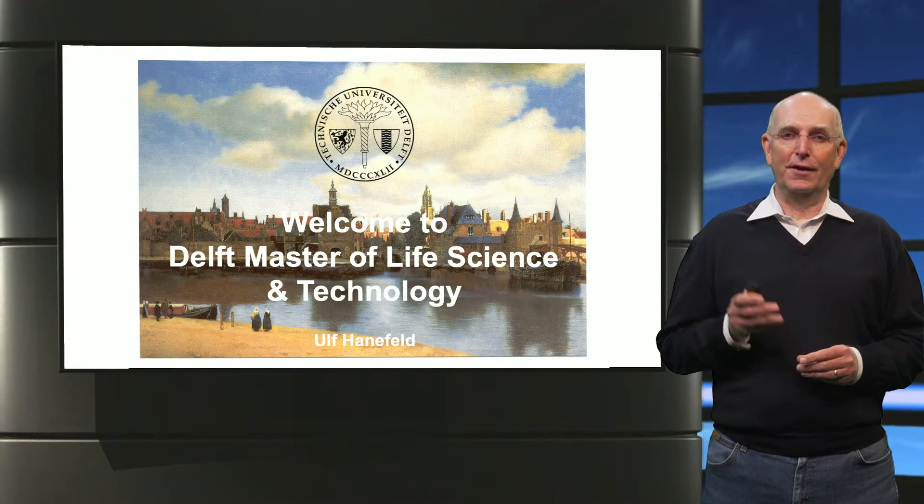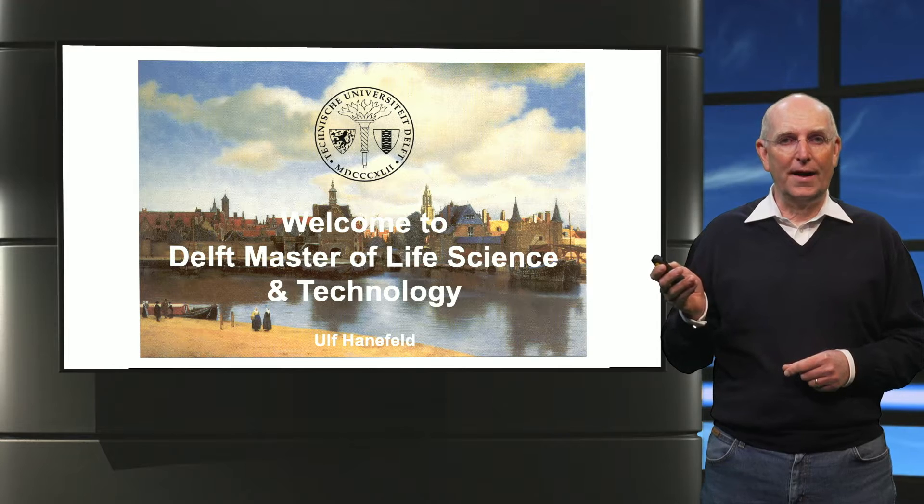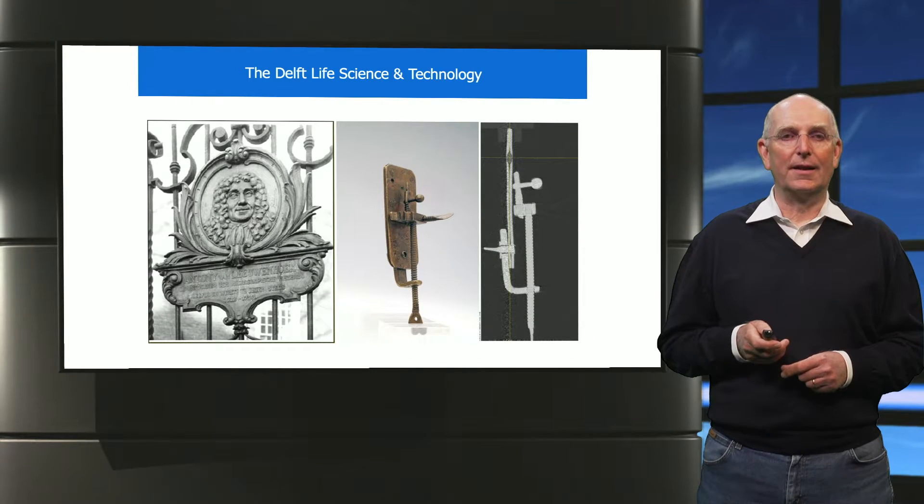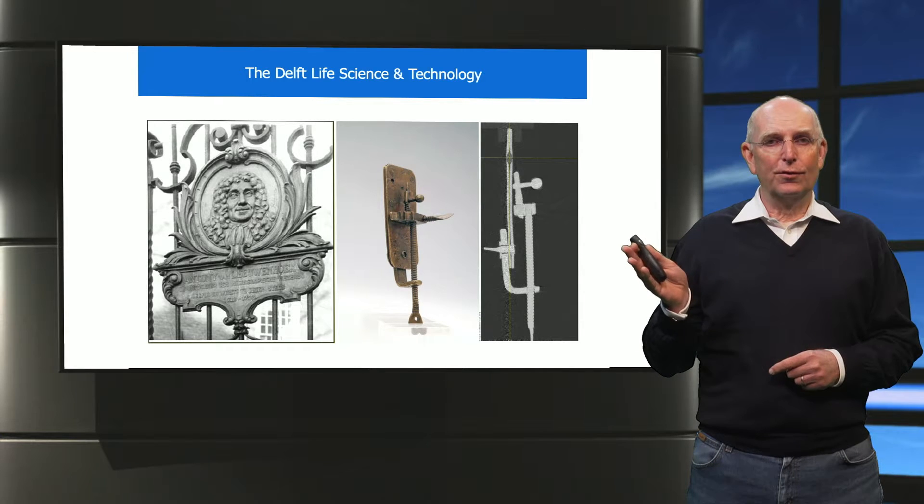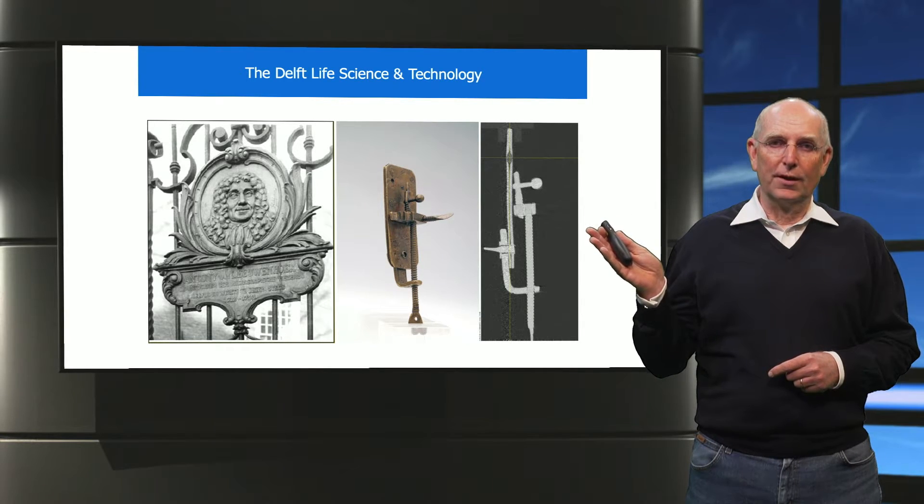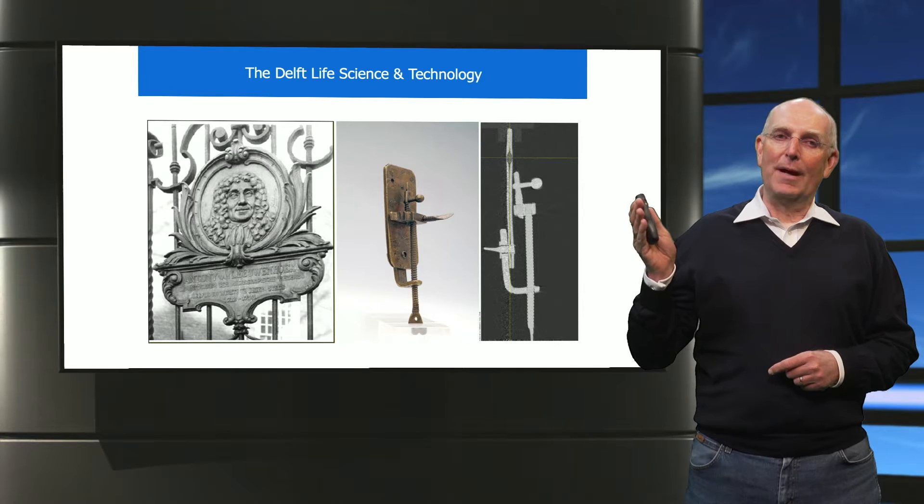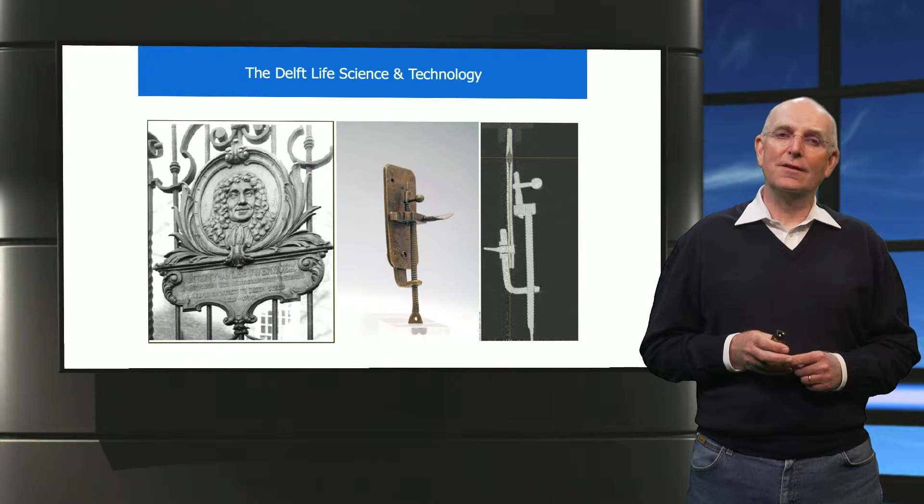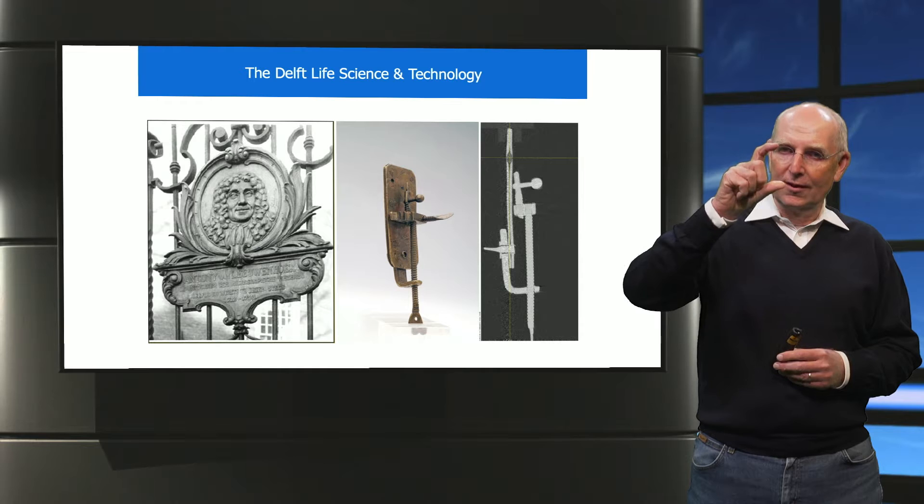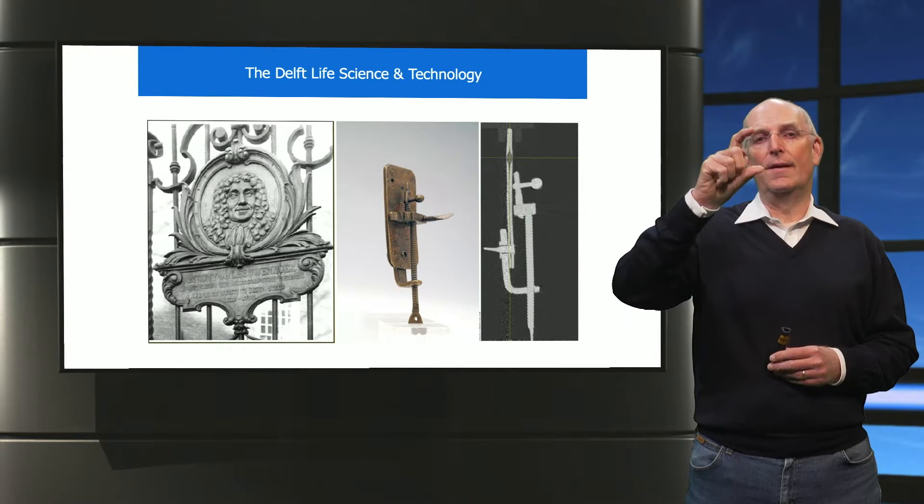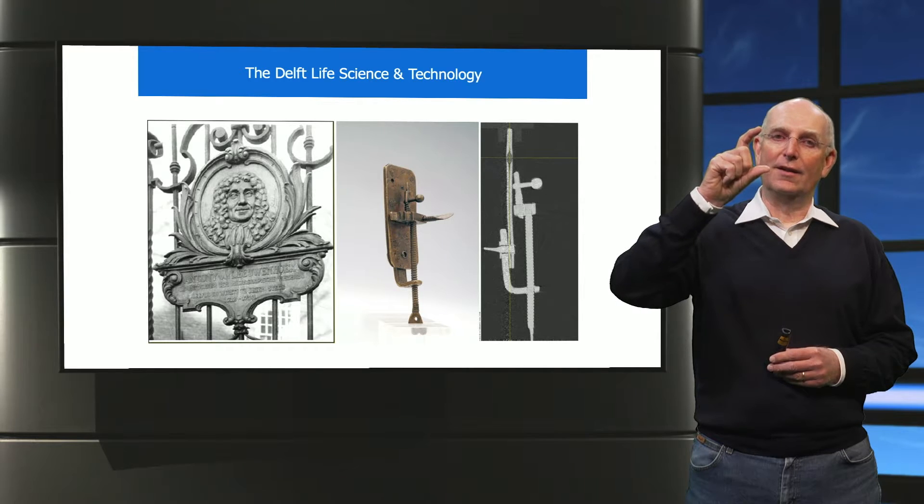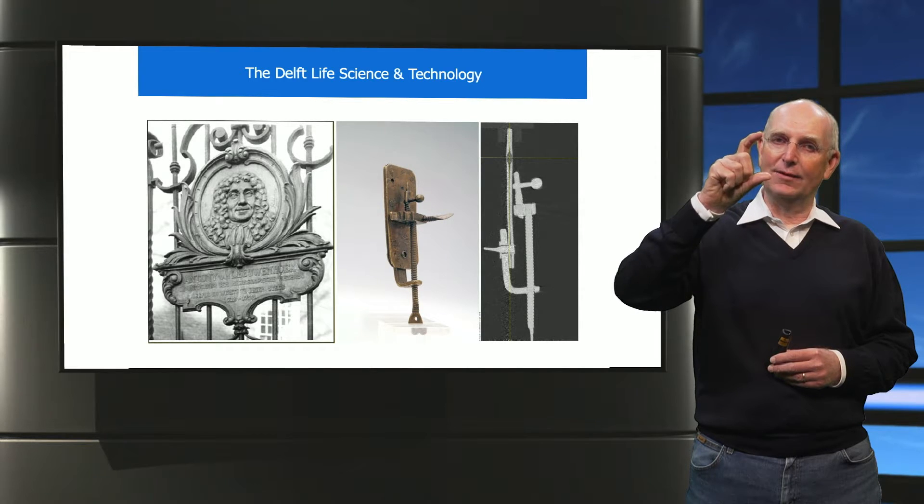Johannes Vermeer had a very good friend who occasionally helped him with painting, and you can see him here on the right side. This very good friend is Antoni van Leeuwenhoek, and Antoni van Leeuwenhoek made a major achievement for mankind. What you can see in the middle is just this big and is a microscope, and with this microscope he managed to find a type of life which we had never seen before.